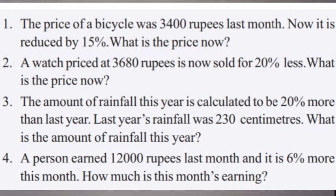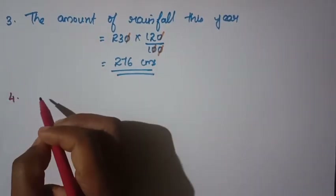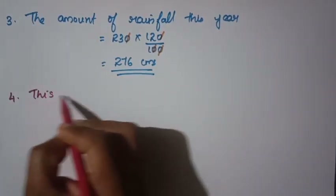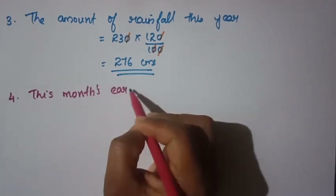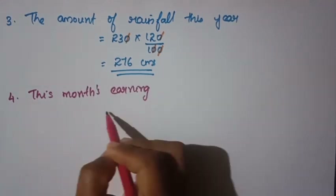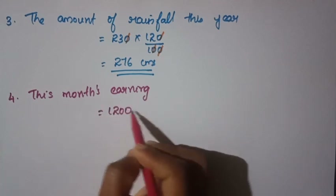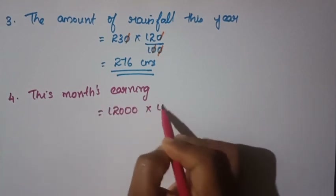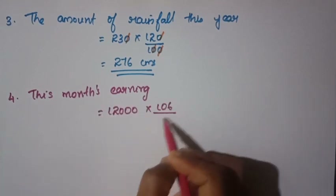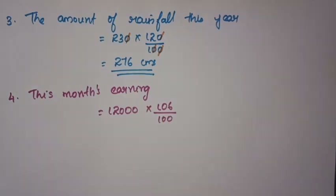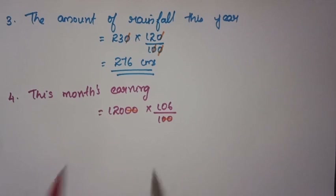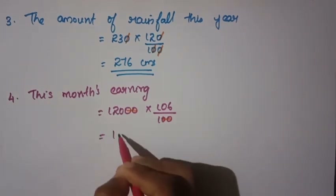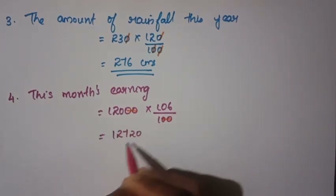If 12,000 rupees is 106% of this month's earnings, we calculate this month's earnings. Multiplying through, this month's earnings work out to approximately 12,720 rupees after applying the percentage.